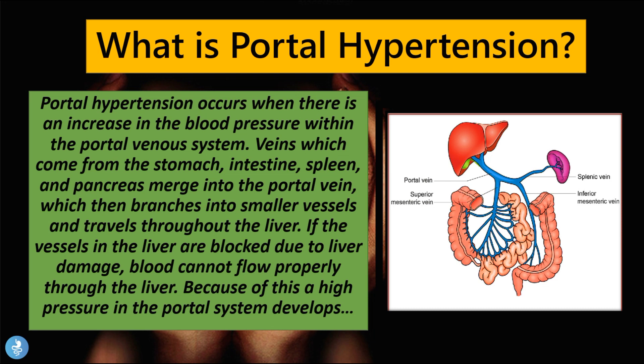Veins which come from the stomach, intestine, spleen and pancreas merge into the portal vein, which then branches into smaller vessels and travels throughout the liver. If the vessels in the liver are blocked due to liver damage, blood cannot flow properly through the liver, and because of this a high pressure in the portal system develops — meaning there is an increase in the tension of blood within the portal vein.